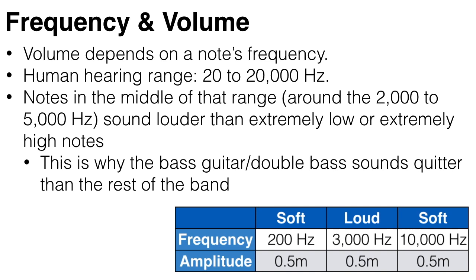This is why bass guitars or double basses always sound quieter than the rest of the band, and why you hear the higher pitched instruments over the rest of the orchestra. So low pitched instruments have to play harder to get the same level of volume as higher pitched instruments.